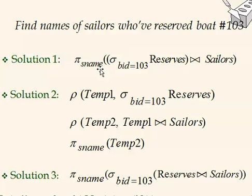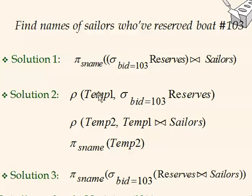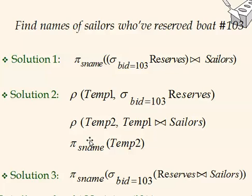Solution two uses assignment. Step one: select from boats where bid = 103 and store in temp1. Step two: join temp1 with sailors and store in temp2. Step three: project the name from temp2. This gives the same result as solution one.